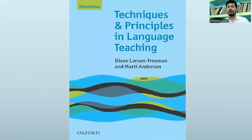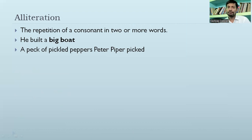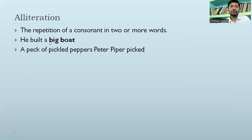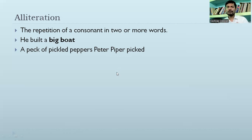Apart from this book, we will go with the term alliteration. Alliteration is nothing but the repetition of a consonant in two or more words. One example is 'he built a big boat' — here B, big, and boat are repeated. Another example: 'Peter Piper picked a peck of pickled peppers' — here P is repeated across multiple words. In these examples, two or more consonants are repeated in a line. This is alliteration.